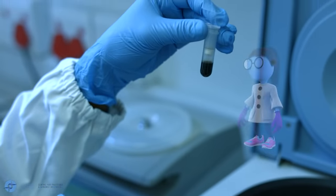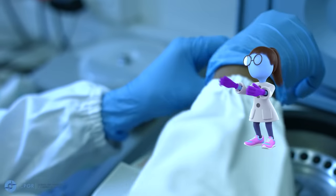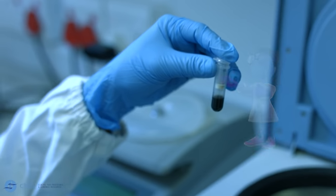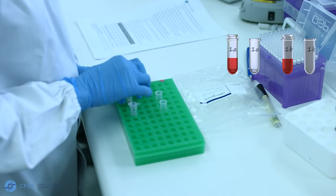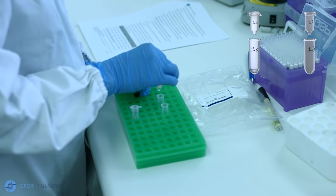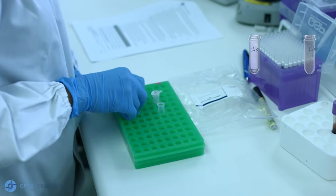At the end of the centrifugation period, all the filtrates should be in the collection tube. Transfer the spin columns, which now contain the DNA, to clean collection tubes and discard the collection tubes containing the lysate.